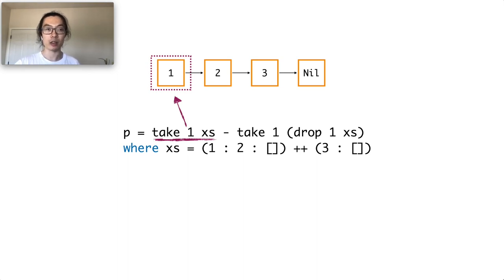Assume that we first evaluate take 1 xs, it will realize that we need the first cell in xs, so it computes the first cell in xs and stores the result in memory. And then it carries on with the computation of P.